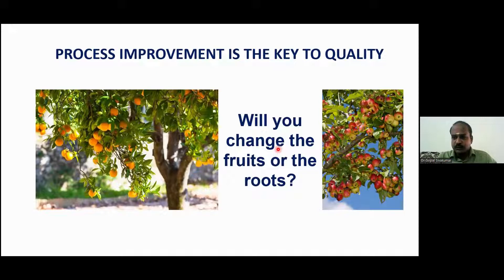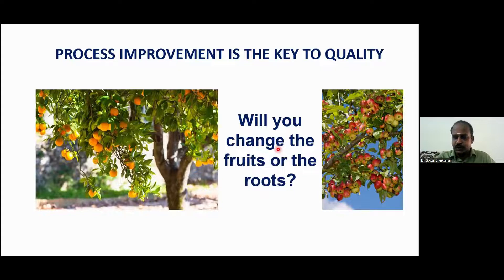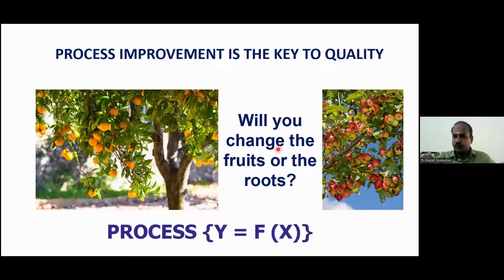If you want to change the results, you have to change the process, and that's why process improvement is unavoidable and a very important activity. Six Sigma is basically a process improvement approach. This process improvement is mathematically called y = f(x), where y is the result we want to improve — the quality problem we want to solve.